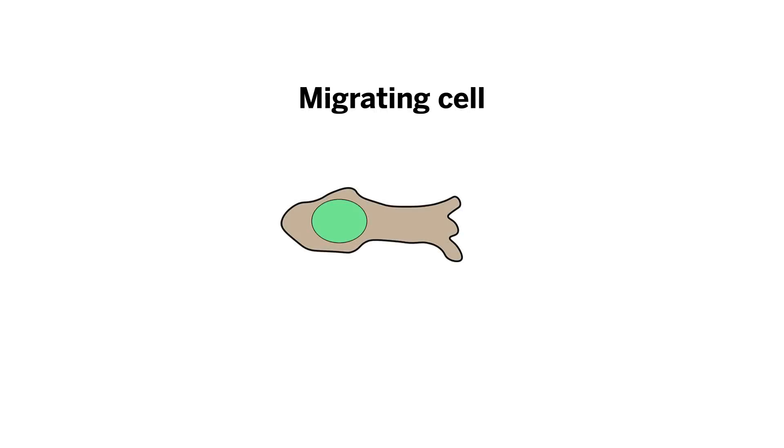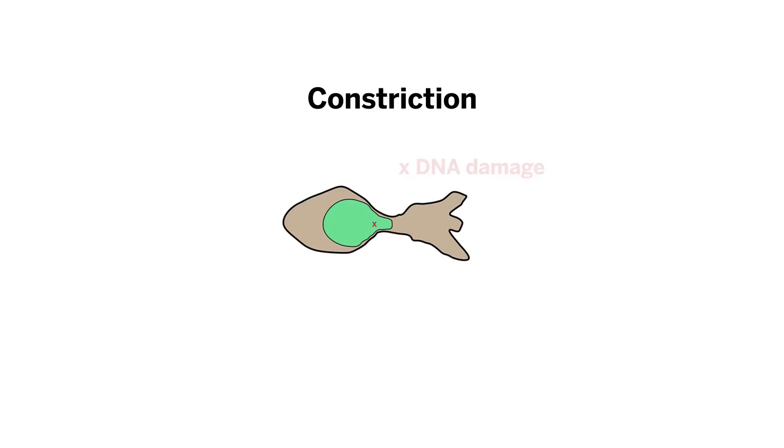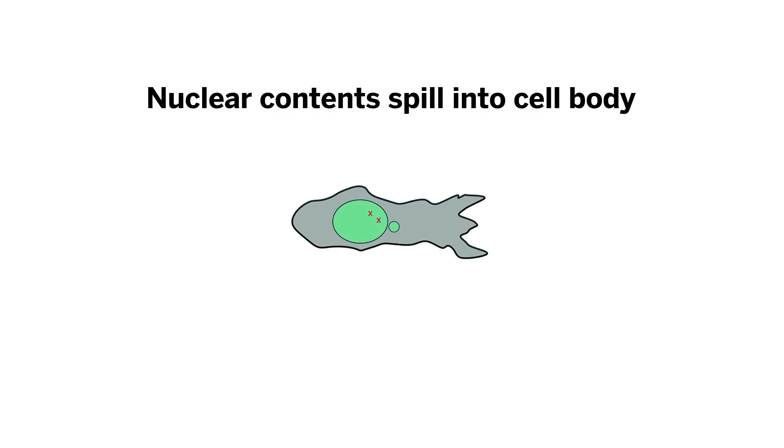Two new studies show that cells don't emerge unscathed from these feats of contortion. A tight squeeze can burst the membrane that surrounds the cell's nucleus and damage its DNA.